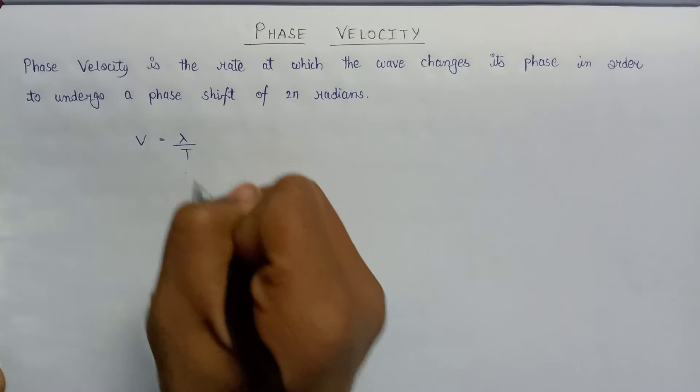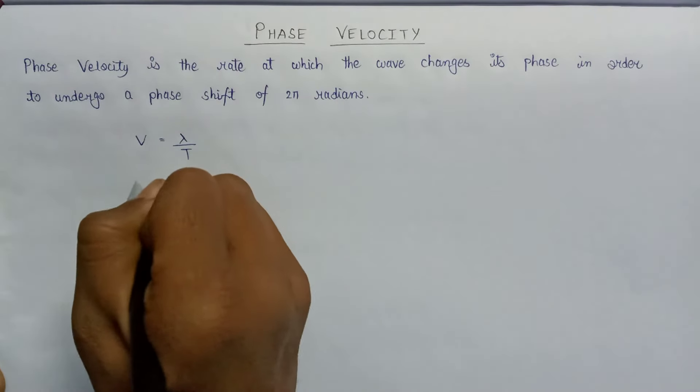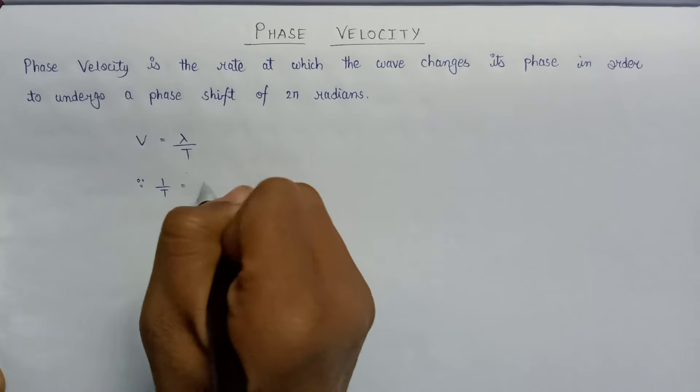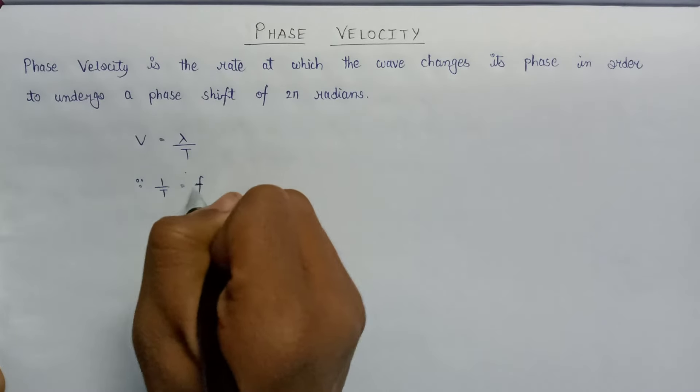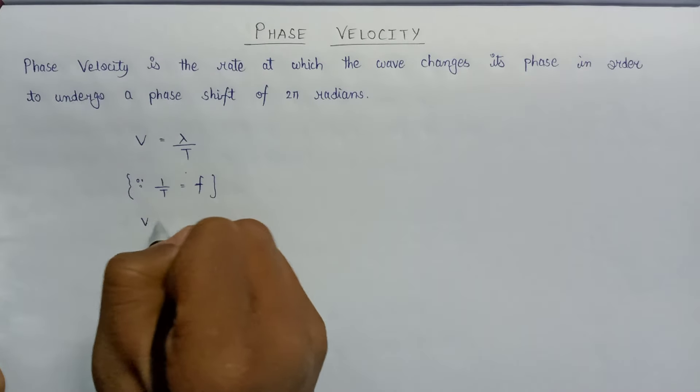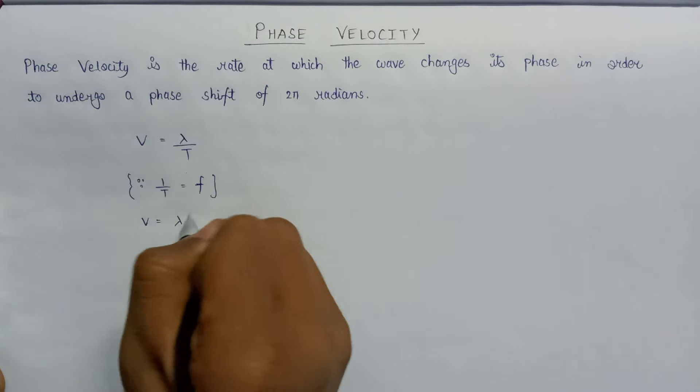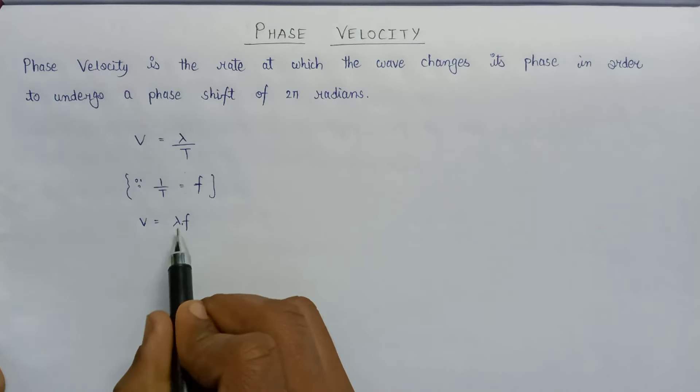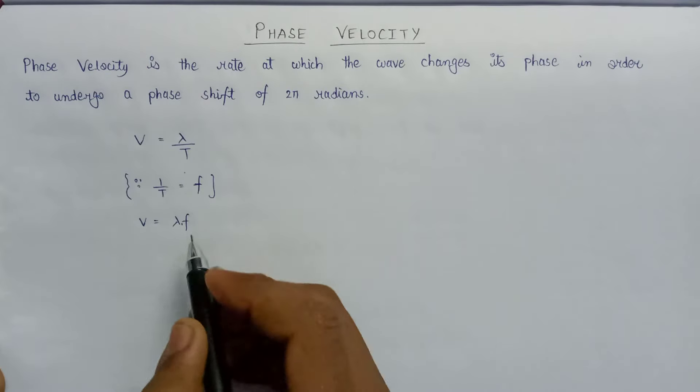Since we know that 1/t can be represented as frequency f, replacing this our velocity will become λf. Now on multiplying the numerator and denominator with 2π...